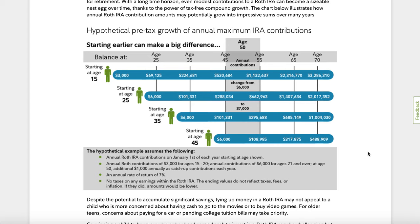Another great benefit of the Roth IRA is that there are no RMDs — required minimum distributions. With some other tax-advantaged accounts, you're forced to withdraw your money by a certain age. With a Roth IRA, you don't have to do anything — you can leave the money in there for as long as you live, keep letting it compound, and you can even pass it down to a beneficiary like your child or spouse, all tax-free.